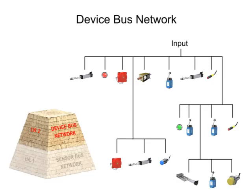The devicebus network is similar in function to the sensorbus network, but works on a larger scale, connecting many sensors and actuators together. The devicebus network also connects equipment to variable speed drives and motor control centers that allow for control of individual elements in the network.